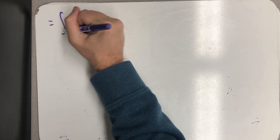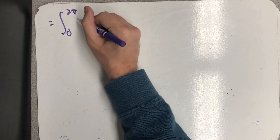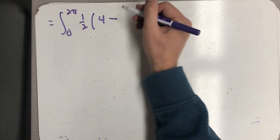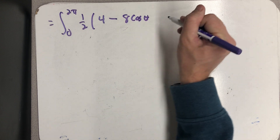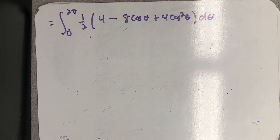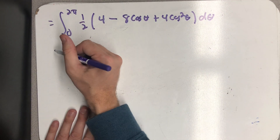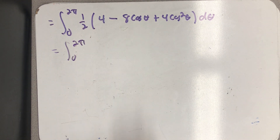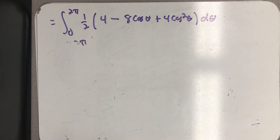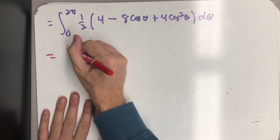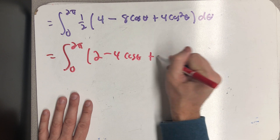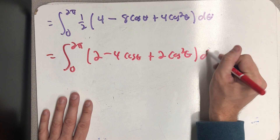So I have the integral from 0 to 2π of one half times (2 minus 2 cosine theta) squared, which expands to 4 minus 8 cosine theta plus 4 cosine squared theta, dθ. Distributing that one half gives the integral from 0 to 2π of 2 minus 4 cosine theta plus 2 cosine squared theta, dθ.